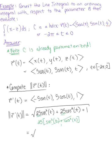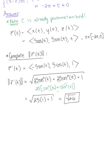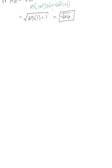So we can simplify our magnitude. That leaves us with the square root of 25 times one plus one, which is the square root of 26. So we'll keep that in mind for when we set up our line integral.